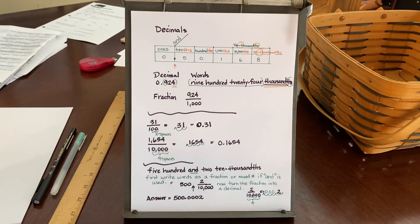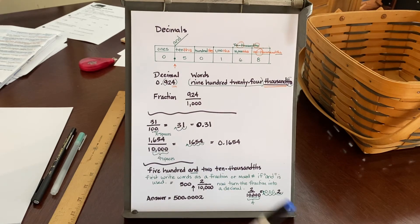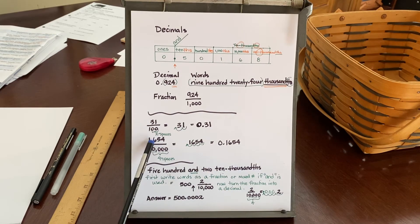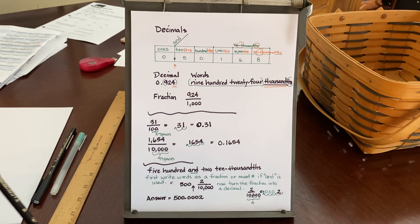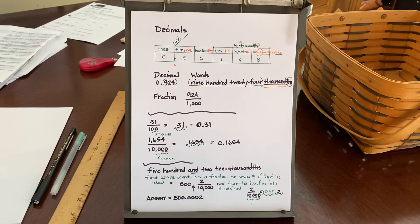Which if we were to do it in words, it would be 1,654, excuse me, I did not say that right. 1,654 ten-thousandths would be the way I'd write that. And the 10 would be hyphenated to the word thousandths because that is the place.